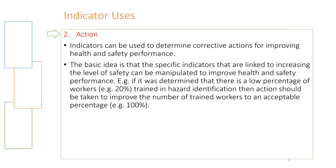Indicators can also be used to take action — to determine corrective actions for improving health and safety performance. By looking at several indicators, one may emerge as a very serious problem, and you can direct all the company's resources to fix that problem. Specific indicators linked to increasing safety can be manipulated to improve performance. For example, if a low percentage of workers are trained in hazard identification, action should be taken to improve that number to an acceptable percentage.